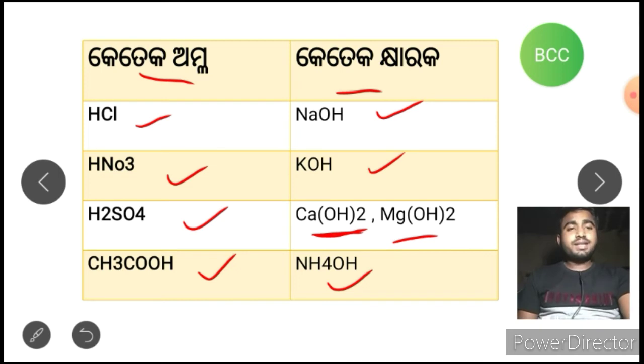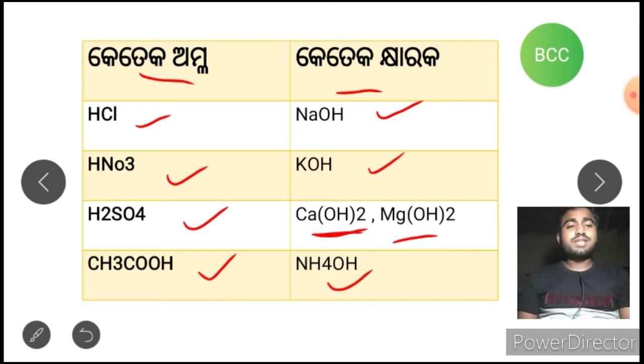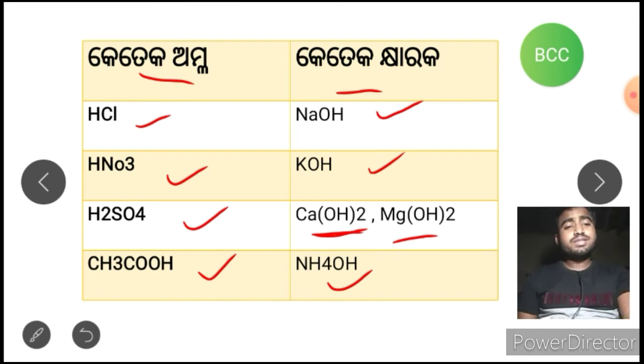HNO3, KOH is potassium hydroxide, CaOH is calcium hydroxide.